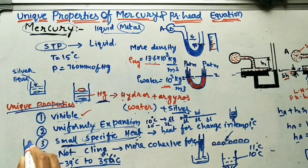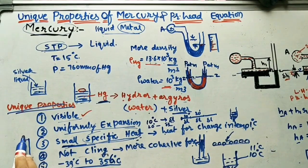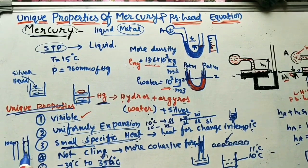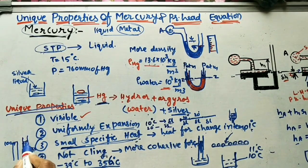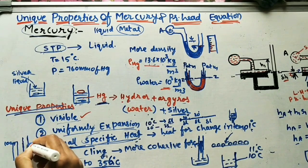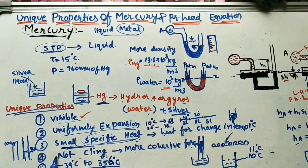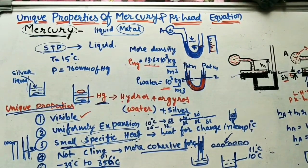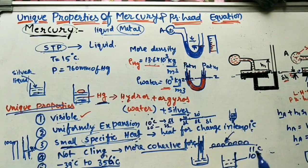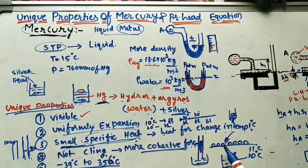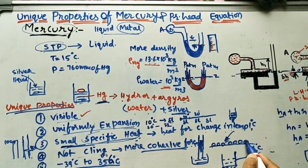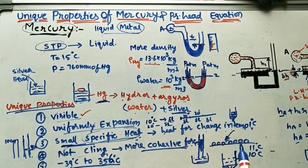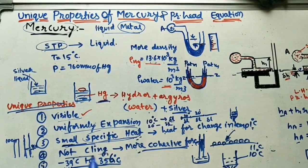Another very important property is that mercury does not stick to surfaces. In a tube, as mercury rises and falls, it leaves a clear path without clinging to the walls, giving an accurate reading. This is due to cohesive forces and high surface tension — when poured on a surface, mercury forms spherical droplets due to molecular attractive forces.